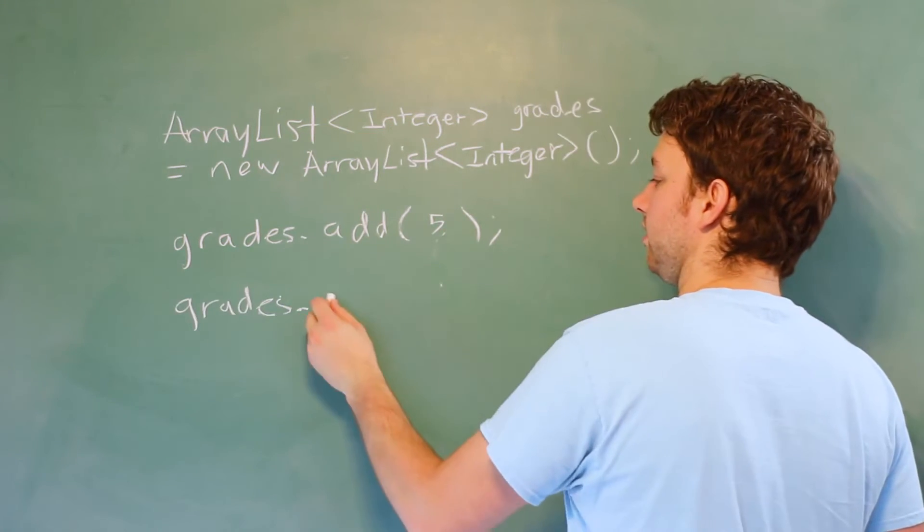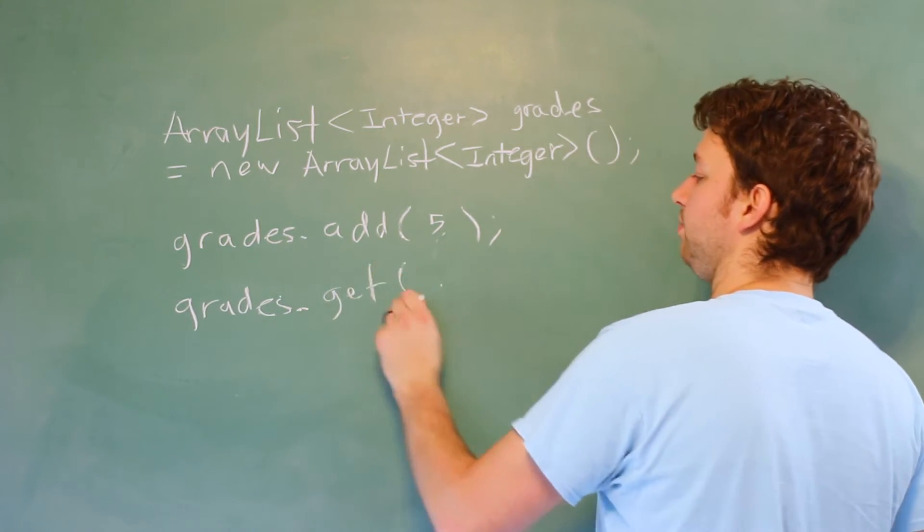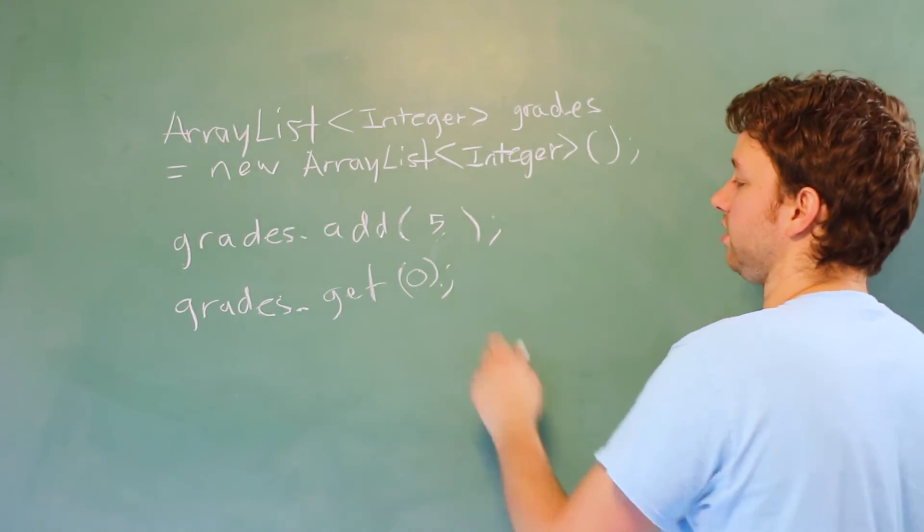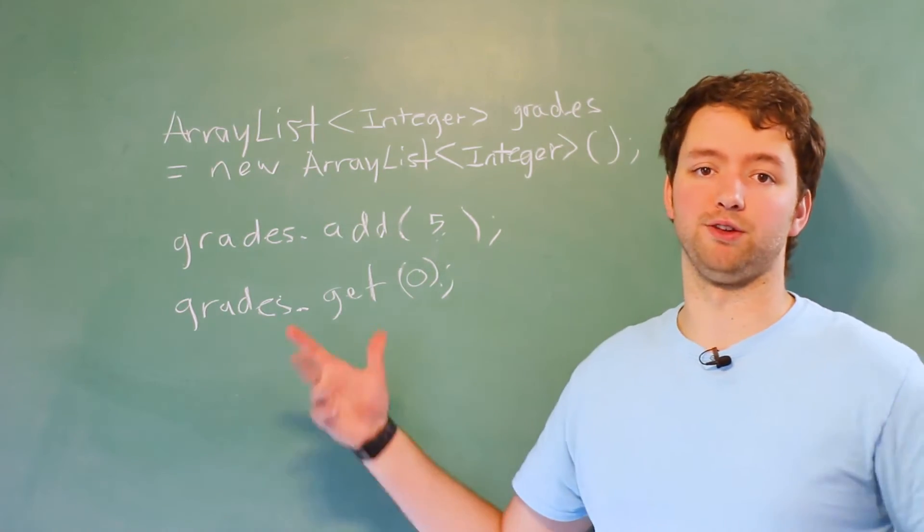To get an element, here's what you do. Grades.get, and then in parentheses, you put the index such as zero. That's going to return the value five.